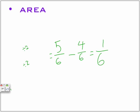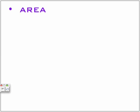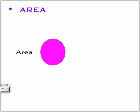About the area. To calculate the area of a circle is pi times radius squared, or pi times radius times radius.